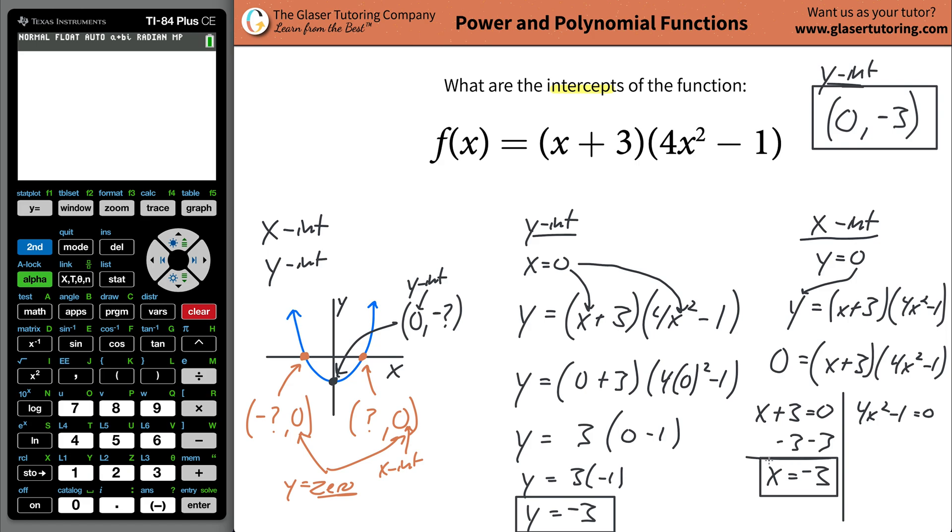That turns out to be one of the x-intercepts now. So let's write that down over here, x-intercept. We're going to have an x-coordinate of negative three. And remember, we always know what the y is. It's always going to be zero.